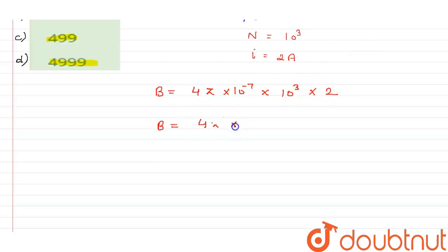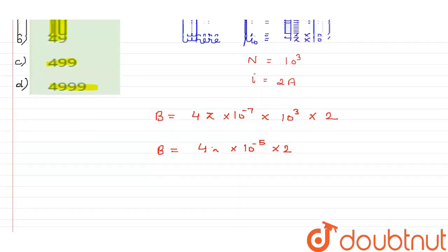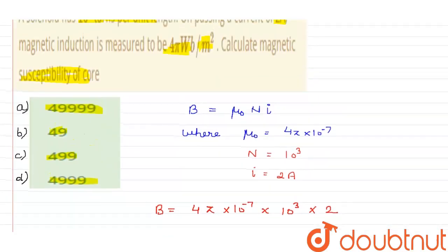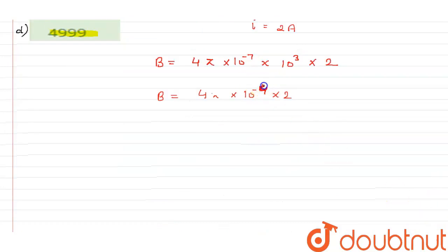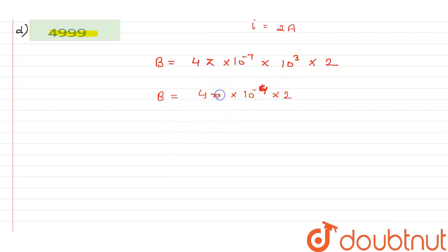So if I solve it here you will get that it equals 4π × 10⁻⁵ × 2. You can say that 4π × 10⁻⁴ because -7 + 3 is -4. So this is my B.